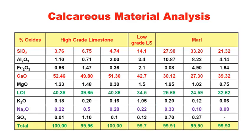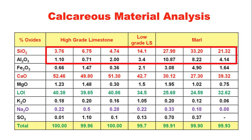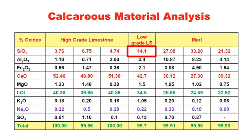The high grade limestone contains more than 50% calcium oxide content. The low grade has 42%, and marl varies from 27 to 39%. All these limestones have some amount of other oxides — silica and alumina — with silica being the major one. Low grade limestone has a high amount of silica compared to high grade limestone, and marl has a very high amount of silica content.